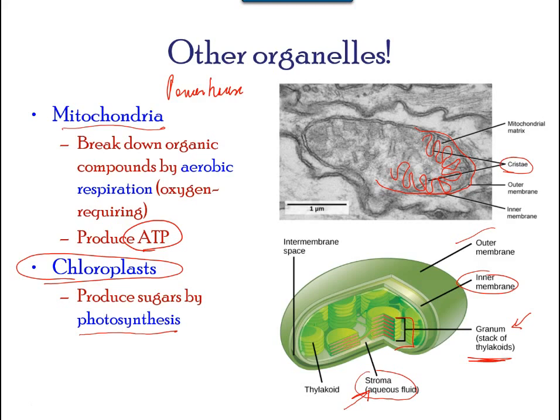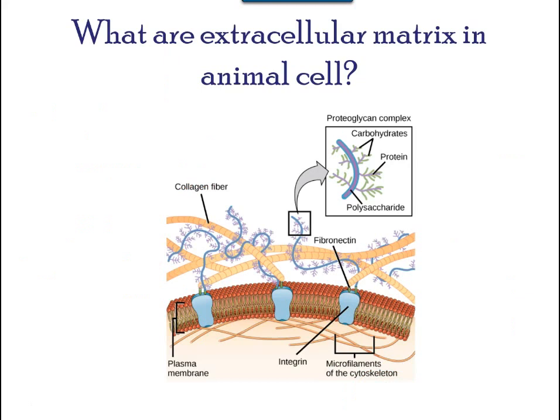The extracellular matrix not only holds cells together to form a tissue, but it also allows cells within the tissue to communicate with each other. Most animal cells release materials into the extracellular space. The primary components of these materials are glycoproteins and the protein collagen, and collectively these materials are called the extracellular matrix.